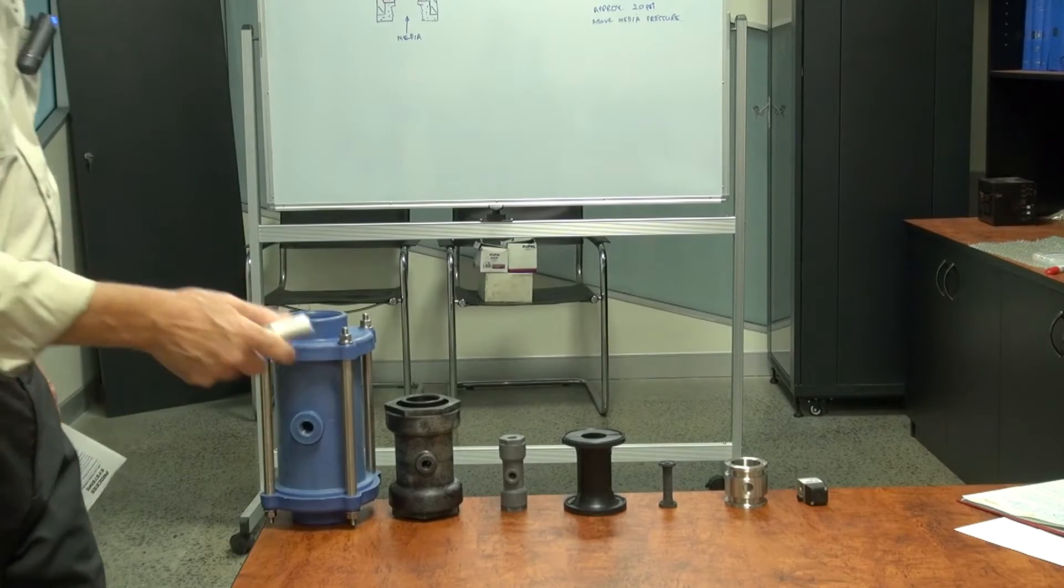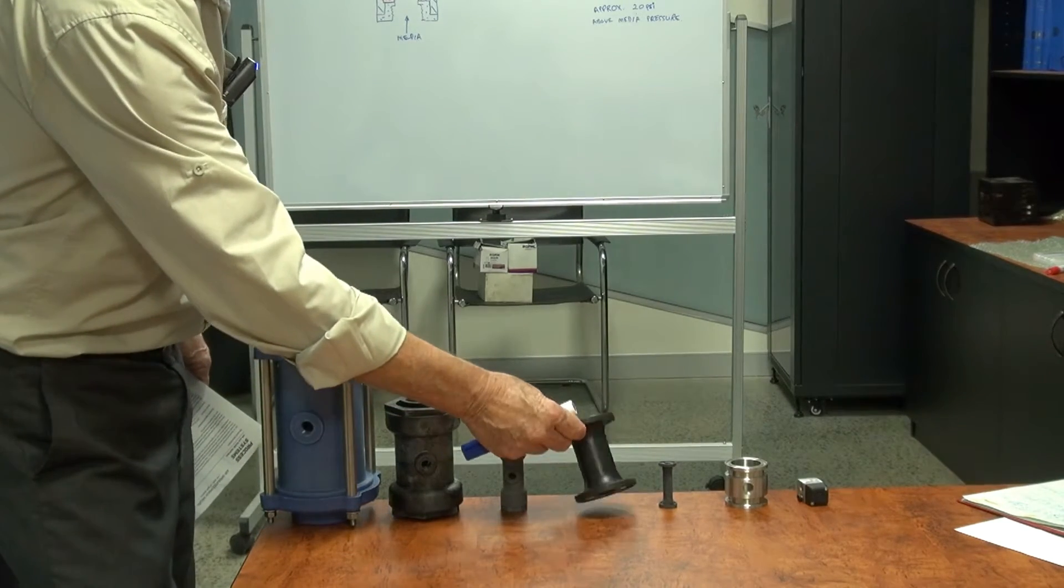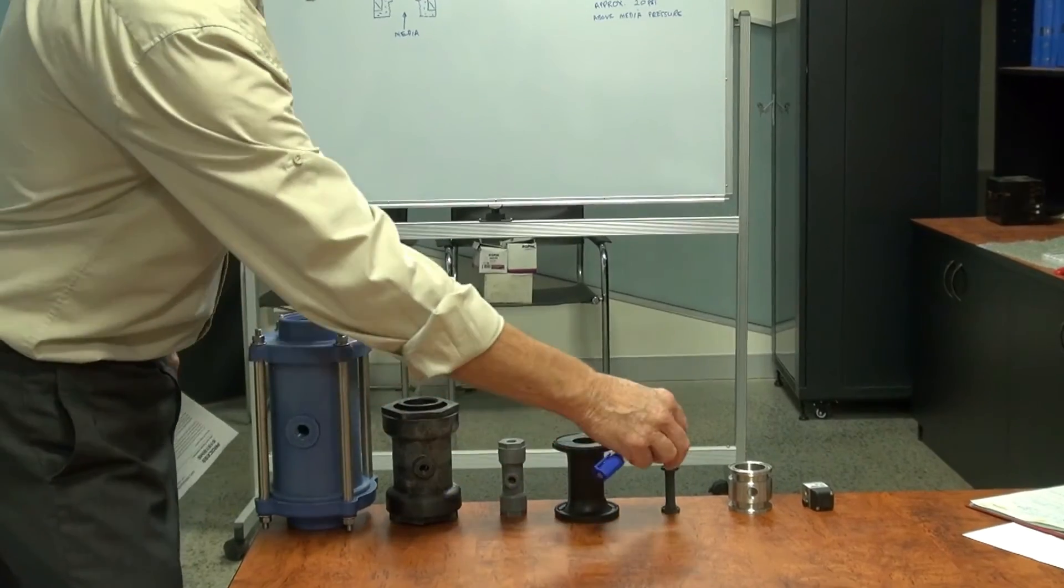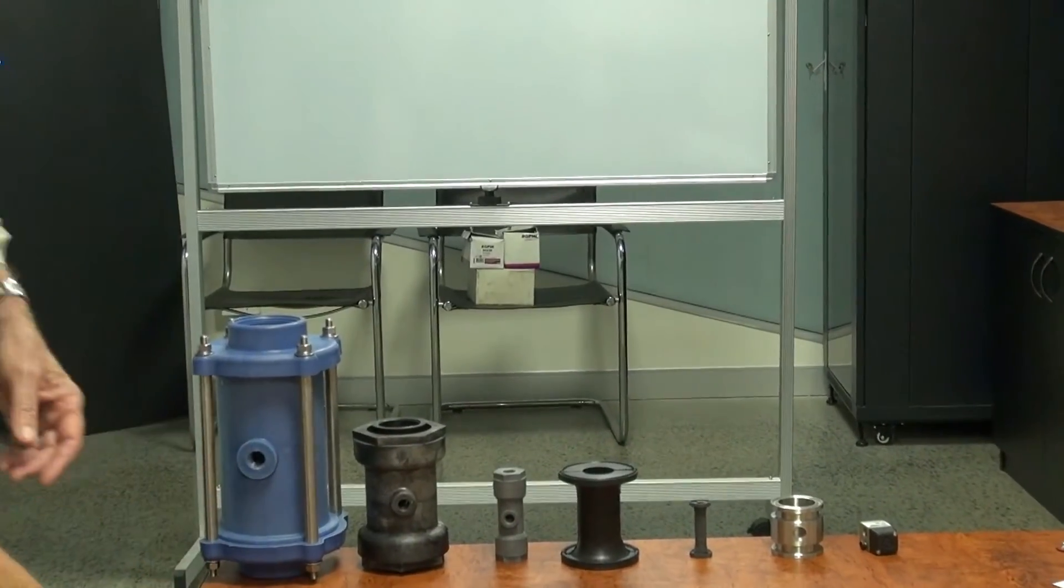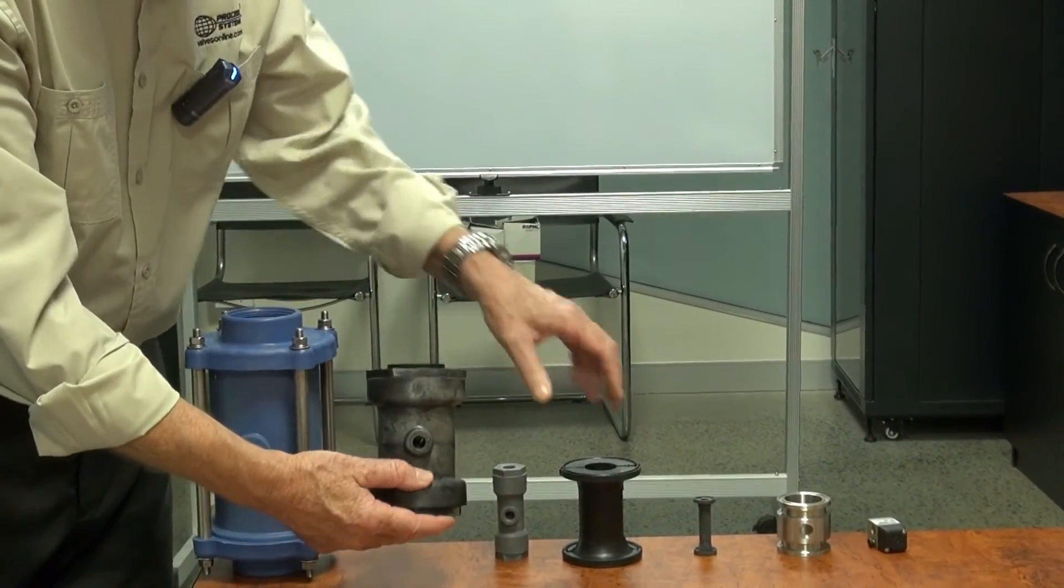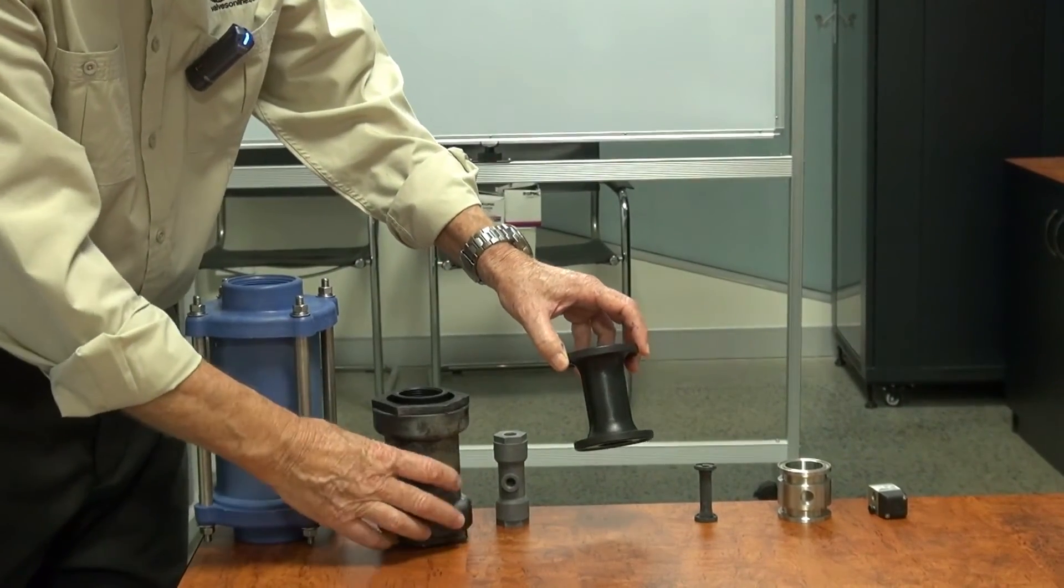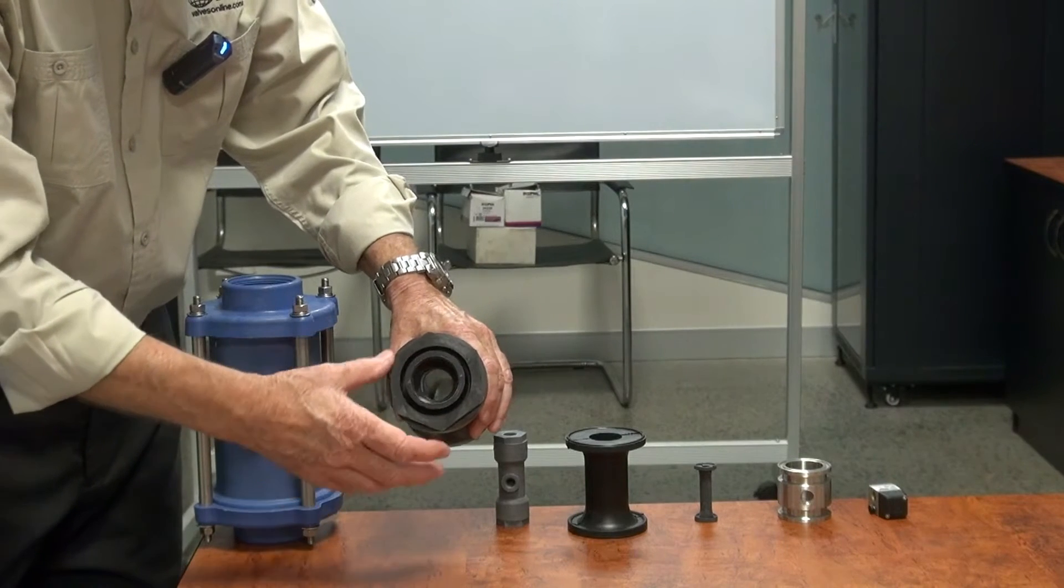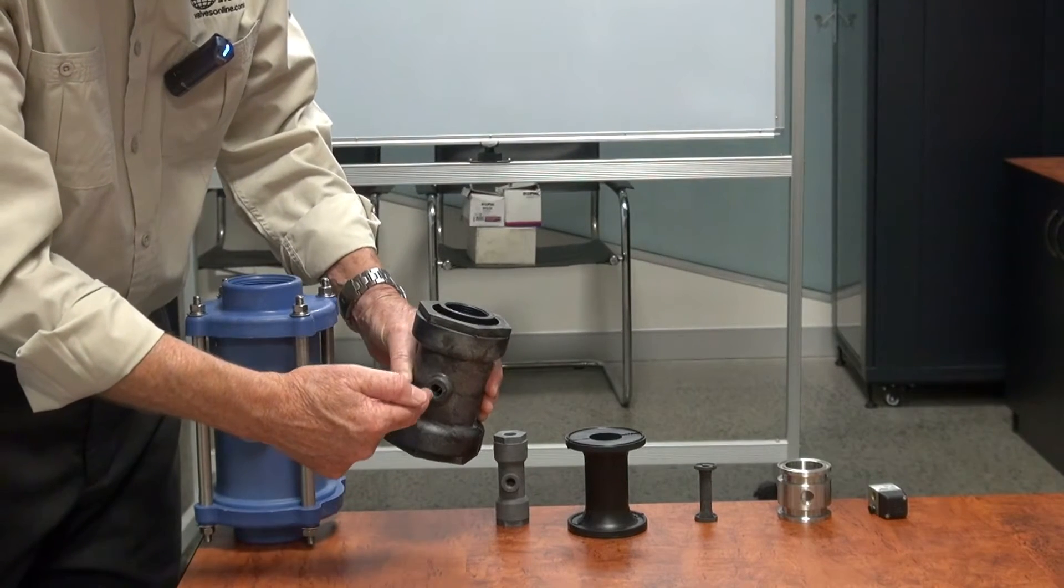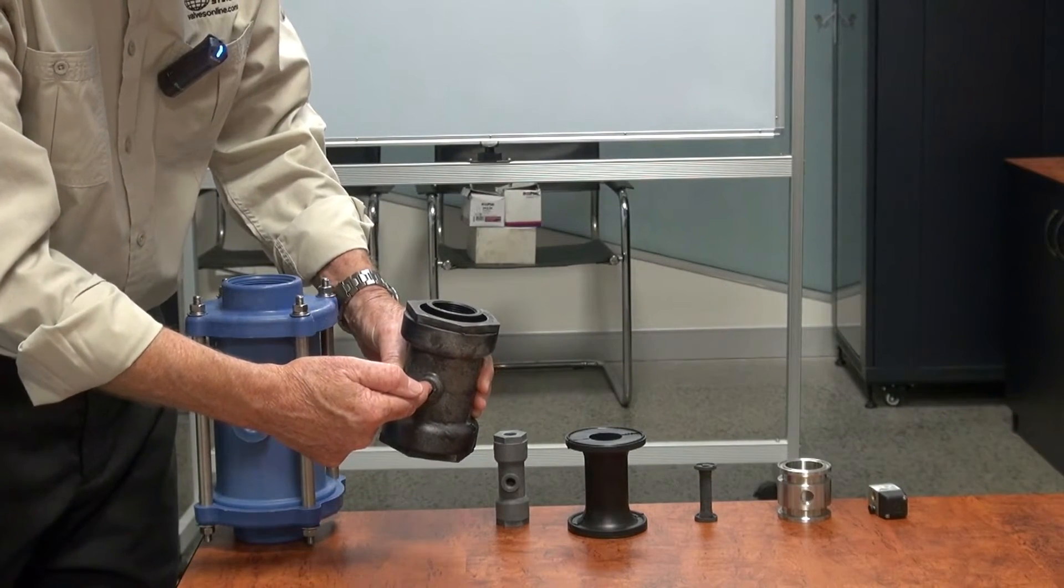The sleeve itself, as you can see, here's an example of the sleeves. They go from different sizes. Here's the valve itself, here's the sleeve, and how this works is the product is going through the valve here and the signal to close it comes on the side.